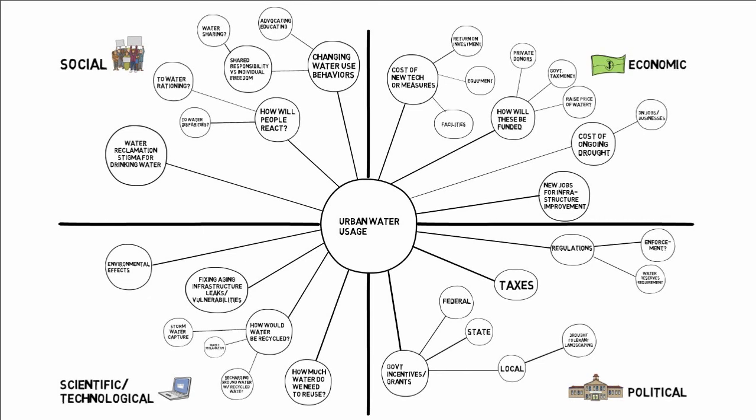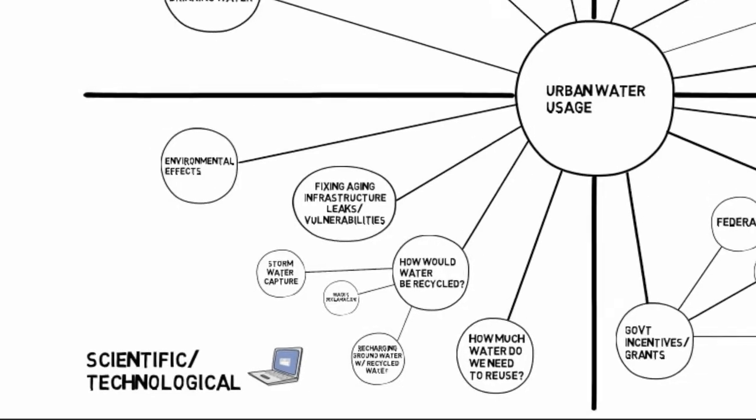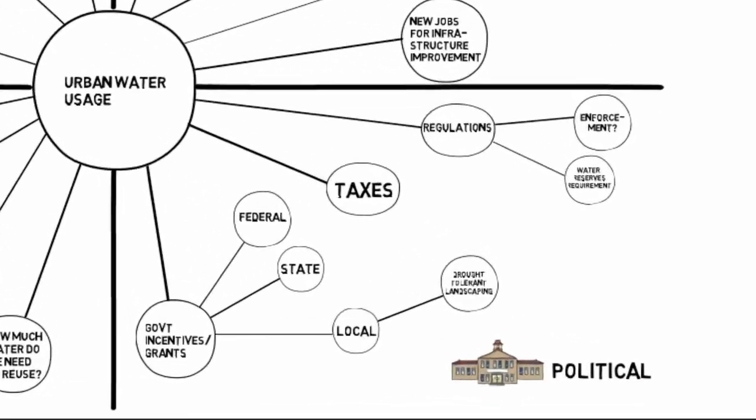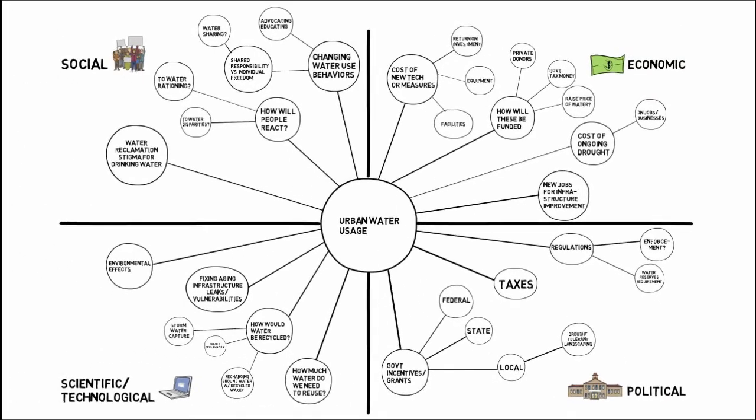Don't worry if you can't think of specifics for some of your questions. Areas of your concept map that look more sparse, such as the technological and political quadrants for the one in this example, will tell you which topics you should do more research for.